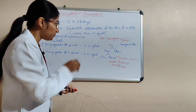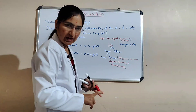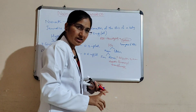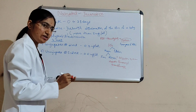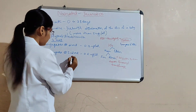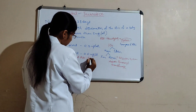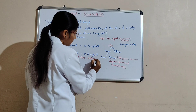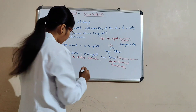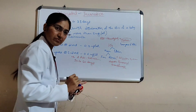In adults, the lifespan of RBCs is 120 days and the number of RBCs is 4 to 5 million. But in a neonate, the number of RBCs is 6 to 8 million and the lifespan is only 50 to 60 days.